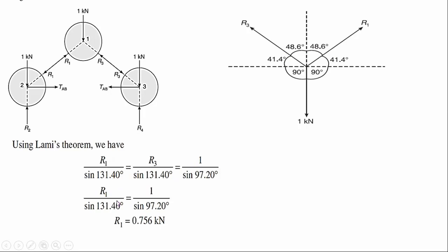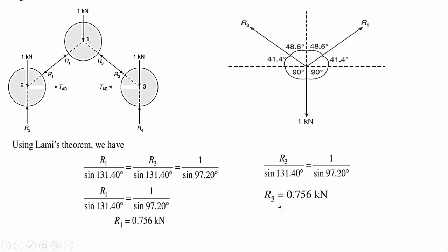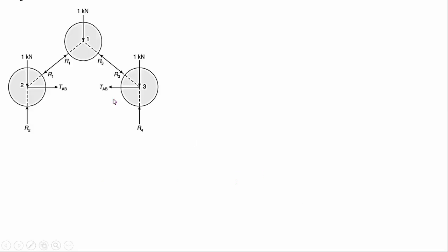Solving: R1 divided by sine 131.4 equals 1 divided by sine 97.2. Cross-multiplying gives R1 equal to 0.756 kilonewtons. Similarly, R3 divided by sine 131.4 equals 1 divided by sine 97.2, giving R3 equal to 0.756 kilonewtons.